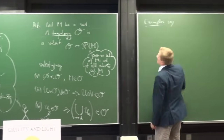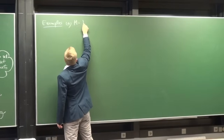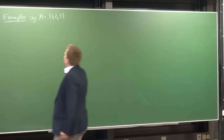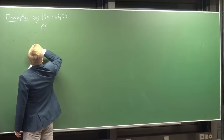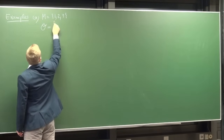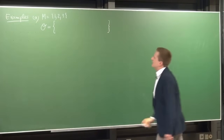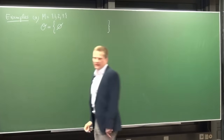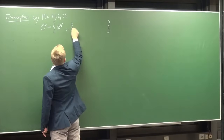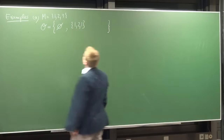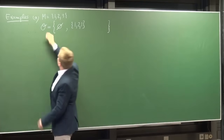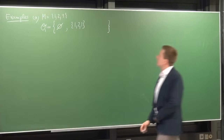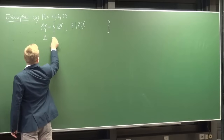Examples. Let's take a set M consisting of elements {1, 2, 3}. Consider O₁ containing only the empty set and the set {1,2,3} itself. Is this a topology? Yes, it is. The empty set lies in it, the entire set lies in it, intersections of any pairs all yield elements already in O₁, and the same holds for unions.